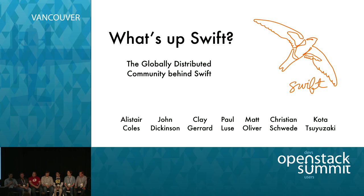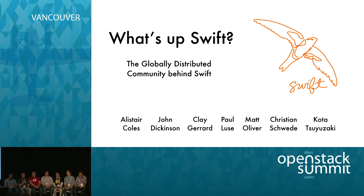What are some recent things in Swift that you're really excited about that have already landed? I got involved specifically for erasure codes two years ago — we wanted to see that happen. I couldn't be happier at how it's all come together; we've got the beta in Kilo. Before that, with storage policies that John and I talked about on stage in Atlanta, that was a tremendous foundation for extensibility — not only for erasure codes but for all sorts of other things. There were multiple talks in Paris, and there are 19 talks this time with Swift in the title. Features like storage policies, erasure code, container sharding, encryption — the list goes on.